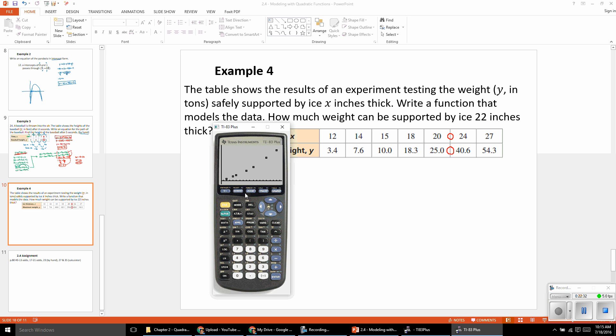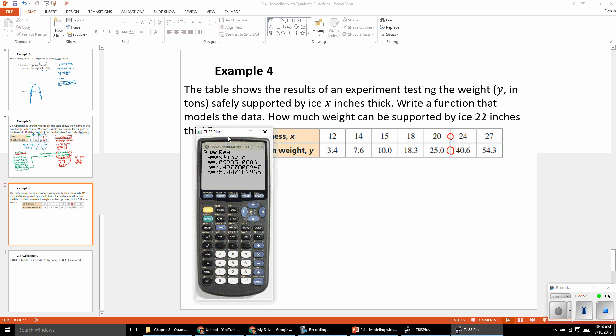Well, now we want to find our regression equation. So what I want to do is, in the stat menu again, we're going to go to calc, and option five is quadratic regression. And we'll hit enter, and you can see there it gives us our a, b, and c values to fit into our quadratic equation.